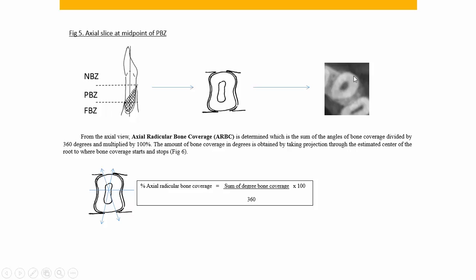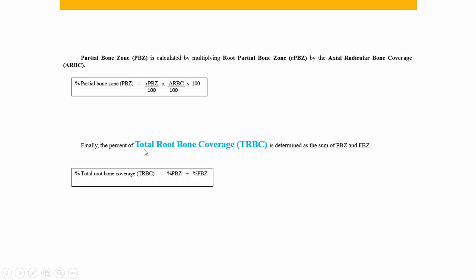There is some burnout using cone beam CT — you can get burnout of some of the cortical bone — but usually you're comparing teeth within the same arch, so they would each have that same relative amount of burnout, so the measurement is still valid. Ultimately you come up with a total root bone coverage — an empirical formula giving a percent of the root covered with bone. Most studies use a sagittal view and measure the thickness of the alveolar bone on the facial and lingual surface, but this method uses all three planes of space.